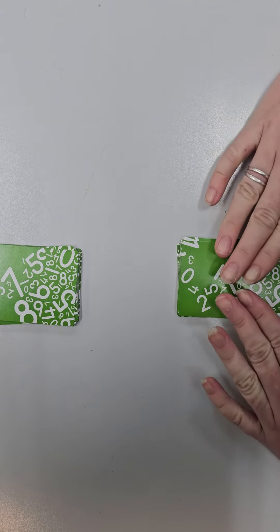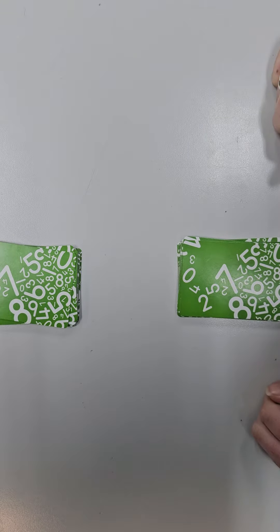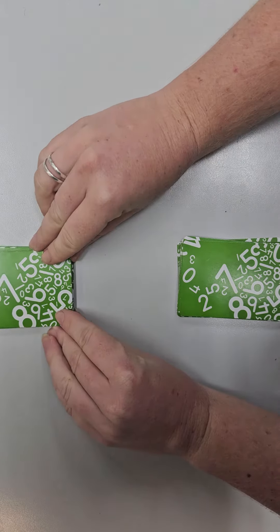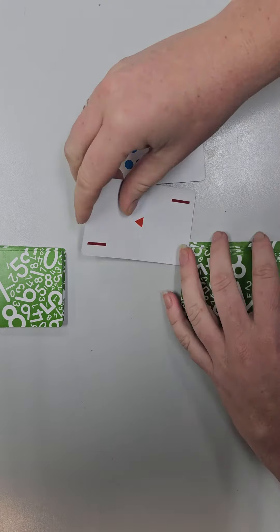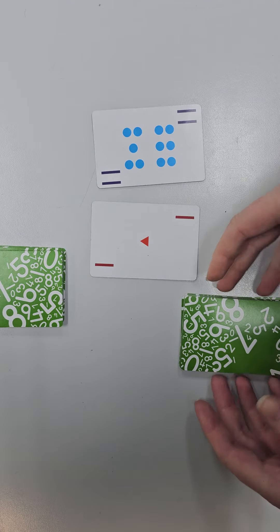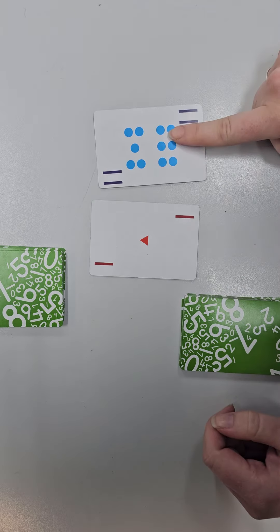So the first thing that we're going to do is divide our deck into two so that each player has got the same amount of cards, and then we're going to take turns flipping over two cards and taking away the smaller number from the big number.